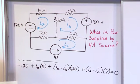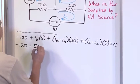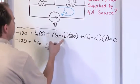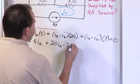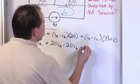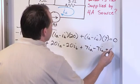Now let's simplify this equation here. So what we're going to have is negative 120 plus 5 times IA plus 20 IA minus 20 IB plus 7 IA minus 7 IC equals 0.